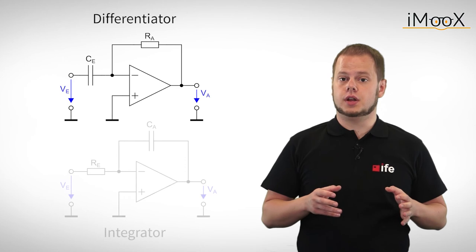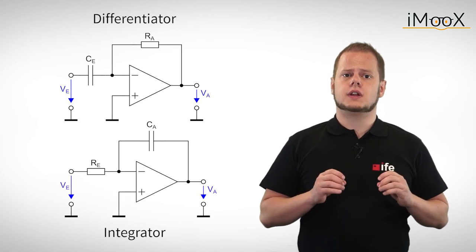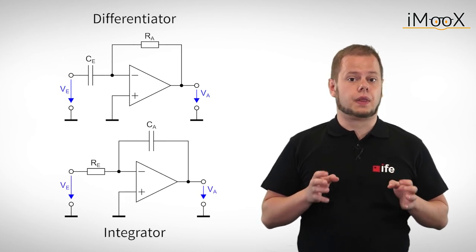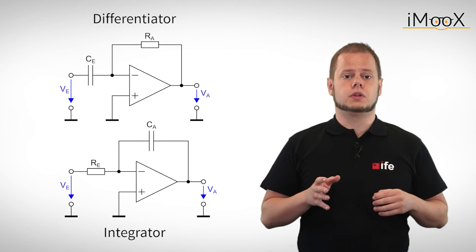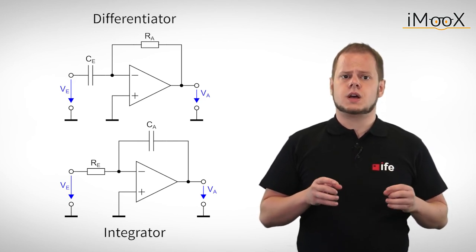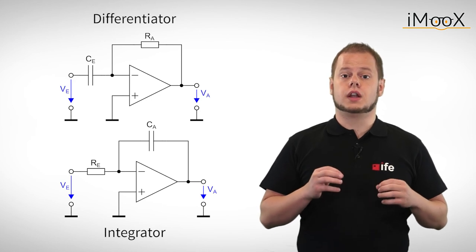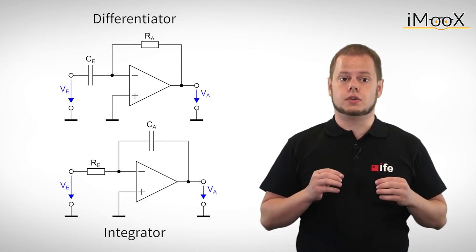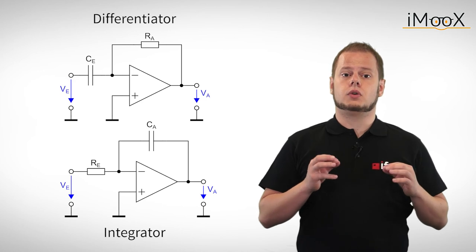These were the principal circuits for the differentiator and integrator. Note that these circuits do not work as intended if you build them. Non-ideal components and other influences cause the circuits to malfunction. Some alterations are required in order to get a working differentiator or integrator. But the underlying circuit stays the same.